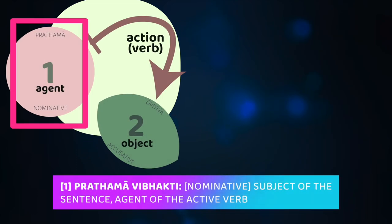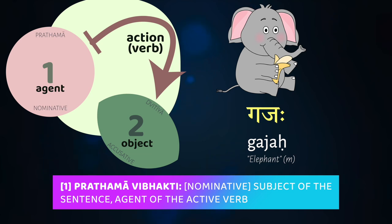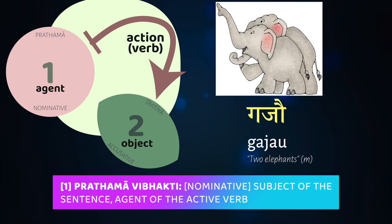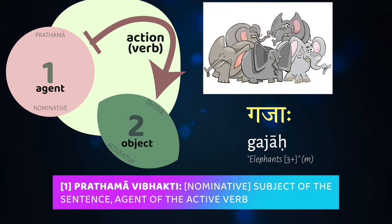The first case, the pratama vibhakti, is known as the nominative in English, and it functions as the subject of whatever active verb you have in the sentence. In our a-stem, if we have our masculine word gajaha, meaning elephant, the nominative forms of this noun are: gajaha, one elephant; gajau, two elephants; and gajaha, three or more elephants.